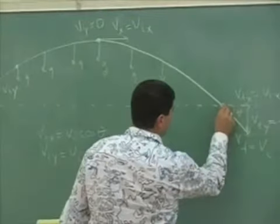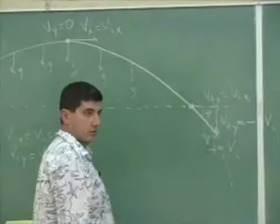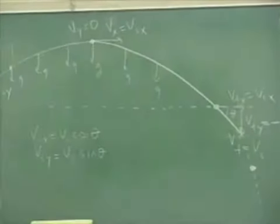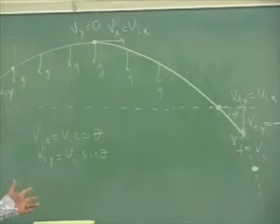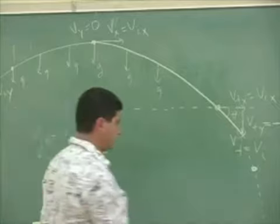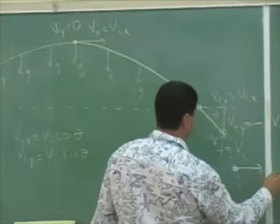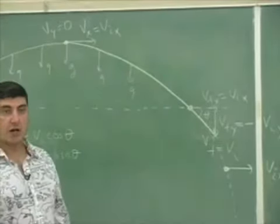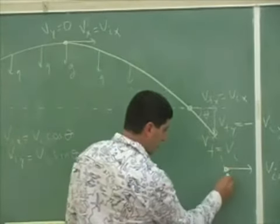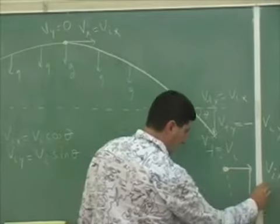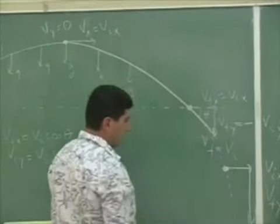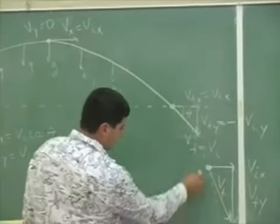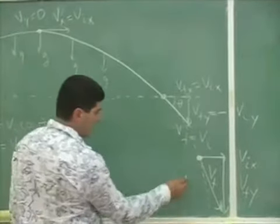If you let the object travel beyond that height and it curves further down, the x component of the velocity still doesn't change. However the y component of the velocity is going to be quite large, and together those two components give a velocity vector tangential to the path at that point.